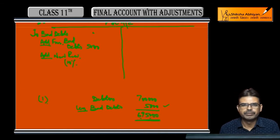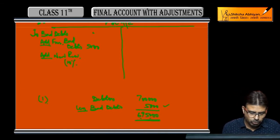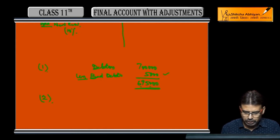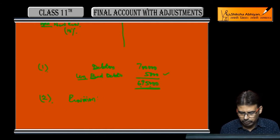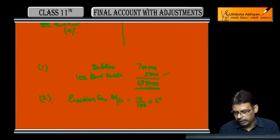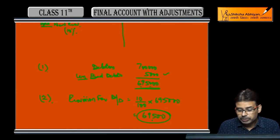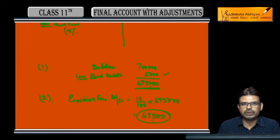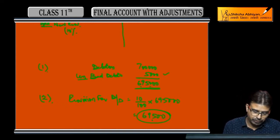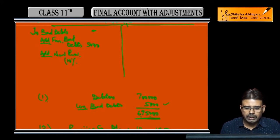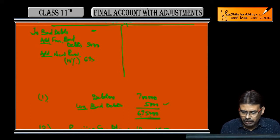Now we have to pass the entry for this. But first I am explaining the amounts. Working note number 2 — provision for doubtful debts: calculate 10% on debtors after deducting further bad debts. Whatever remains after subtracting further bad debts from debtors, calculate the percentage on that — that becomes your provision for doubtful debts. So: further bad debts 5,000 + new provision 69,500 = 74,500.